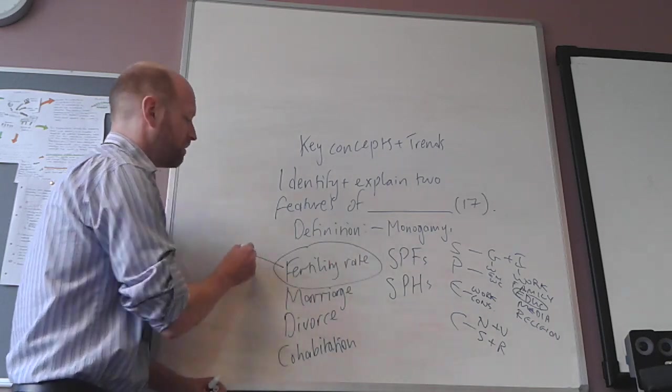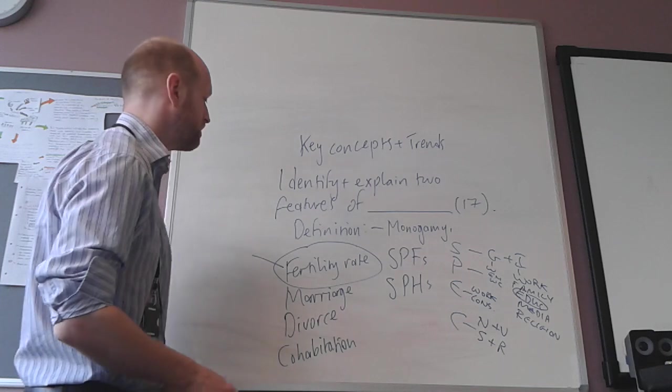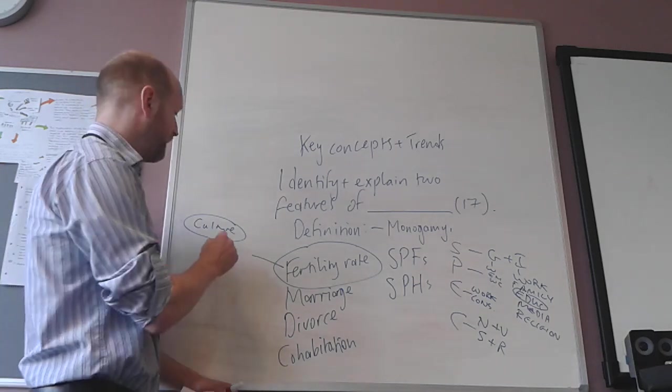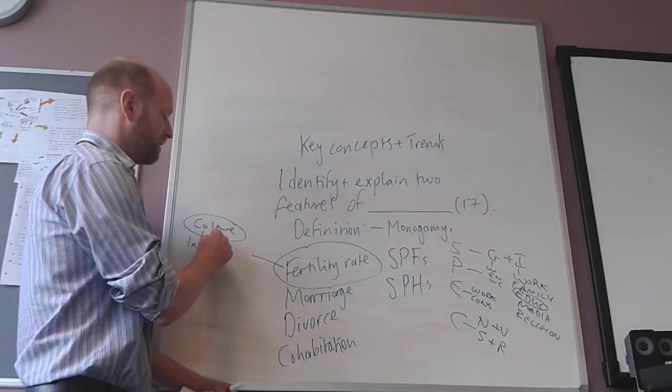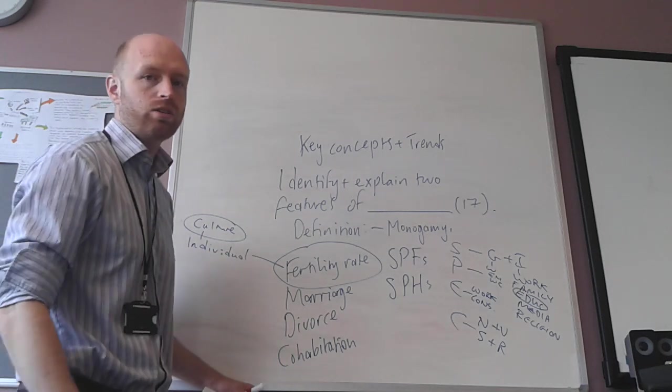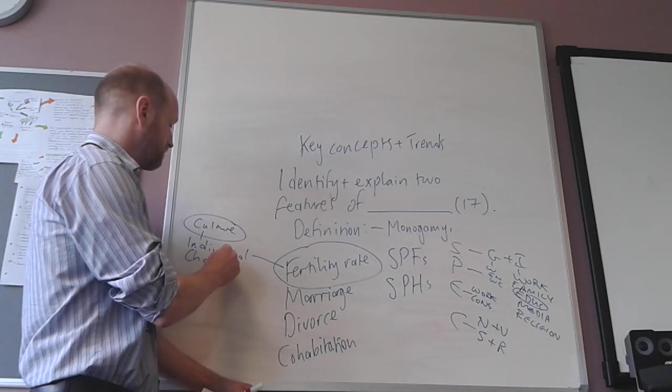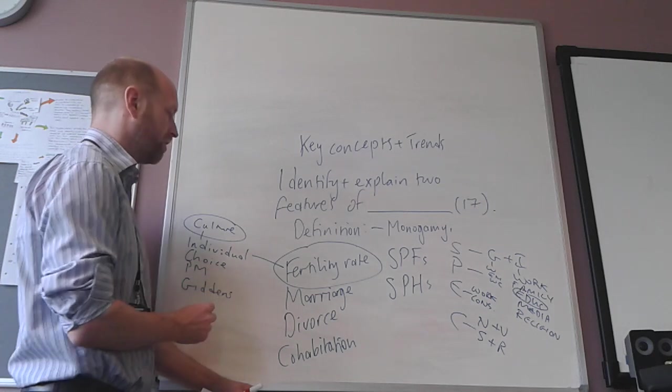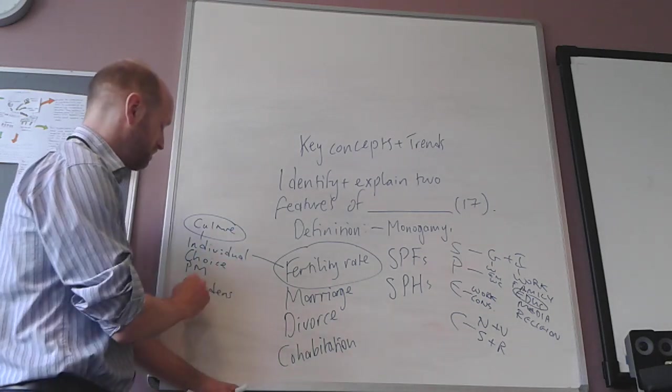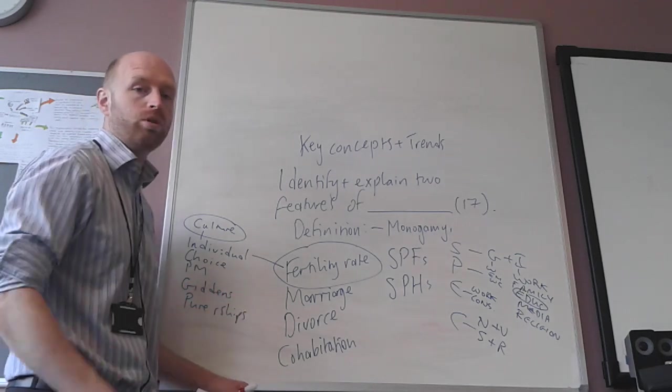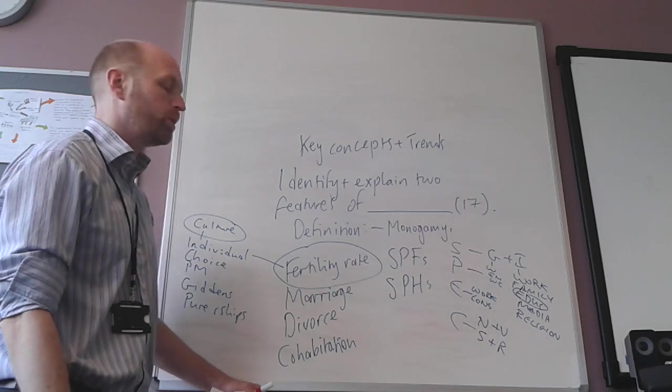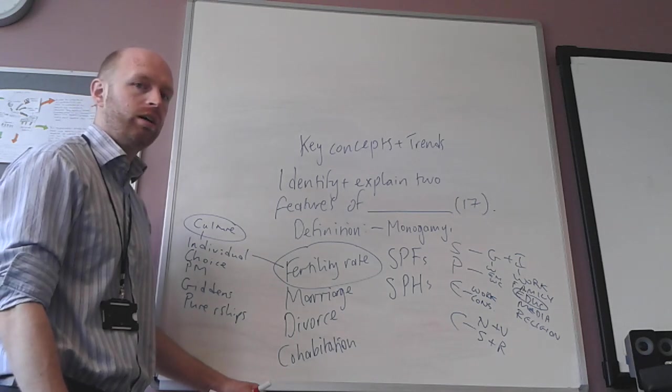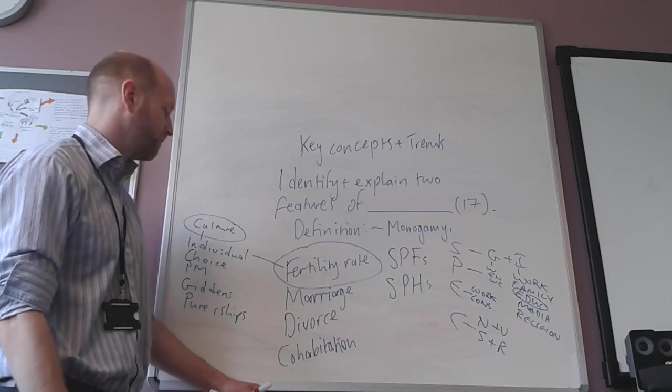So let's just take one example. The fertility rate has decreased. One of the reasons for the fertility rate decreasing is changes to our culture. So that enables me to talk about culture of individualization, the individual rather than society, the idea of choice. I can talk about post-modernists like Giddens. They argue we have pure relationships based on the idea of mutual satisfaction of individual needs. People are having fewer children. They're not necessarily going to stay with a partner and have children with that partner. And they also choose because they've got individual autonomy whether to have kids or not.